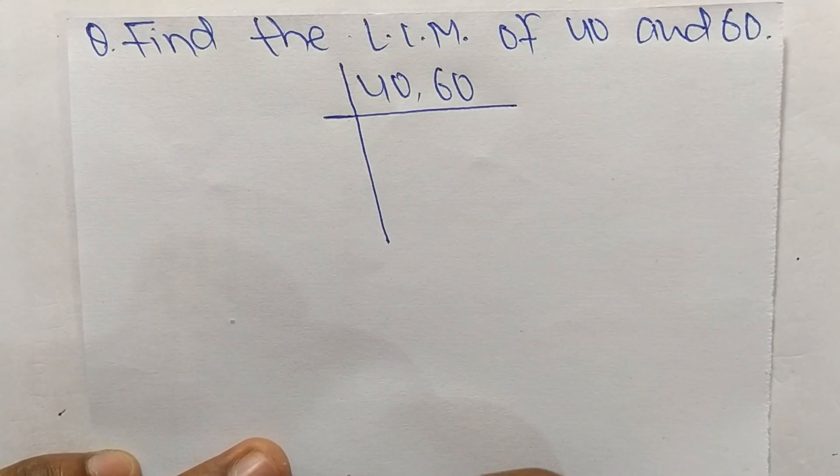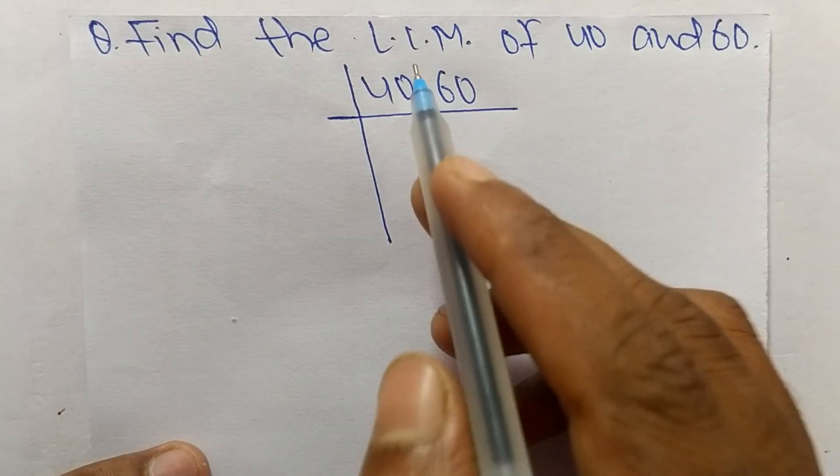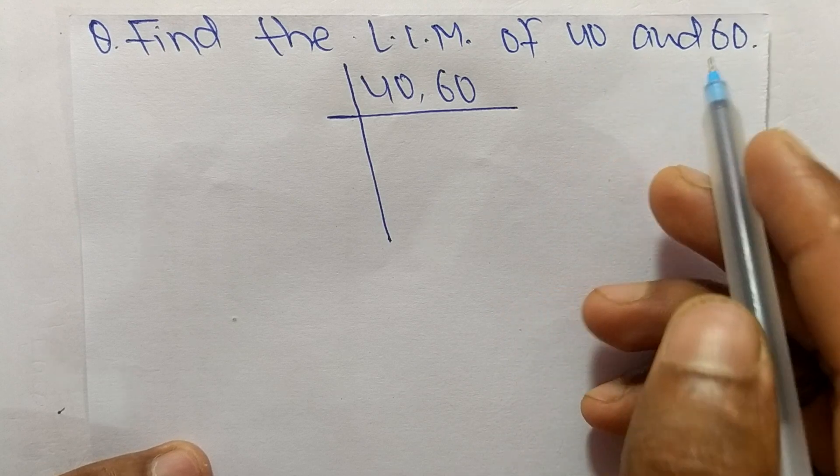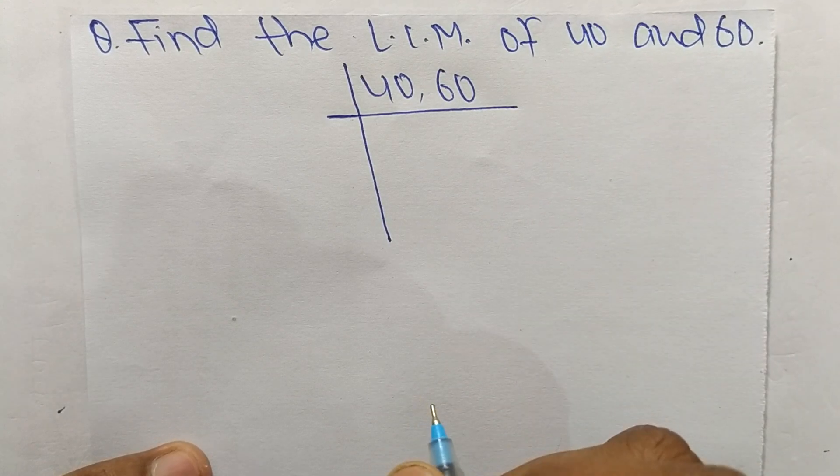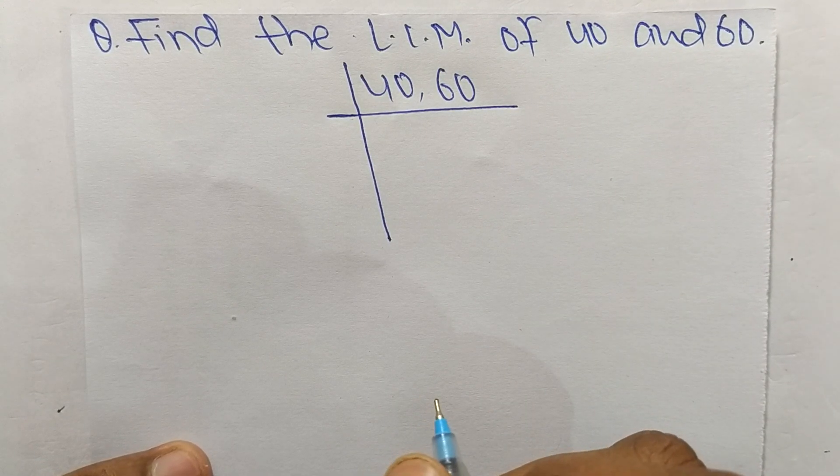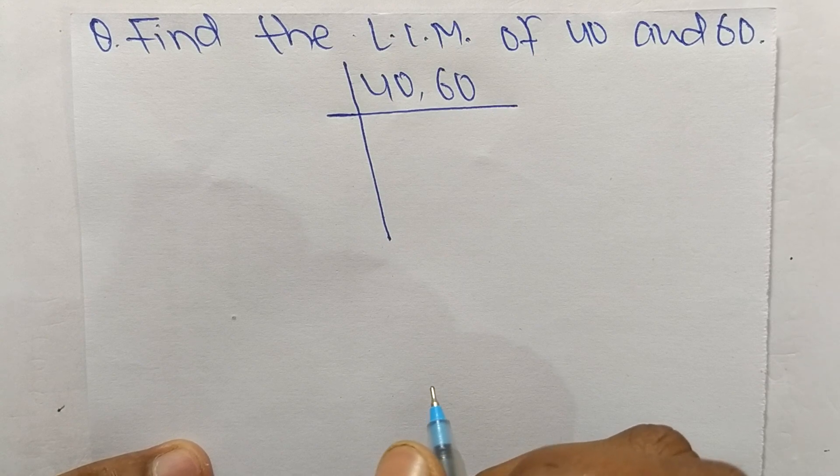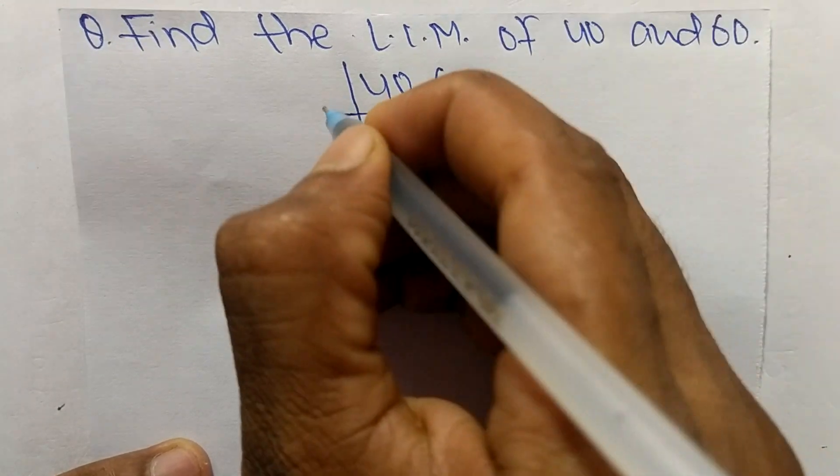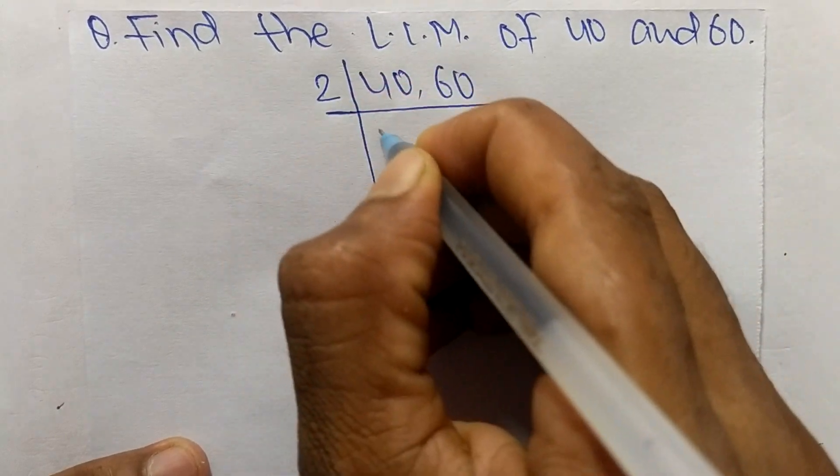Today in this video we shall learn to find the LCM of 40 and 60. To find the LCM, first we choose the lowest number that can exactly divide 40 and 60, so the number is 2.